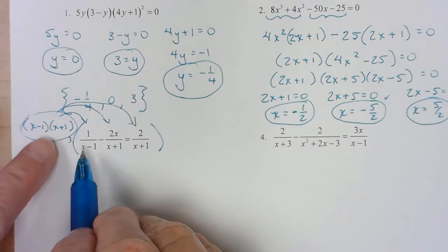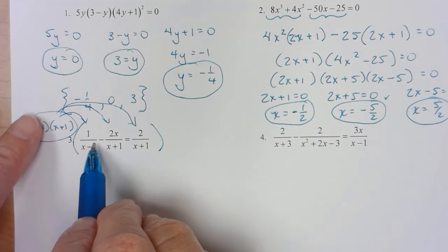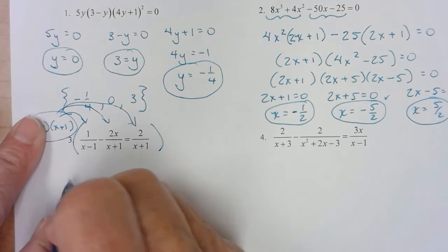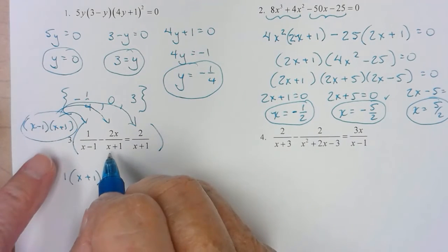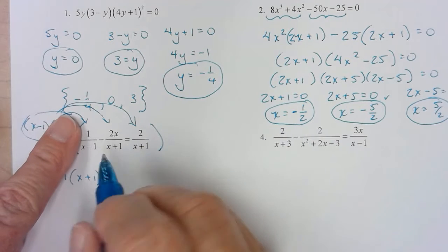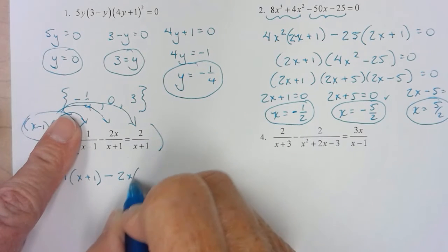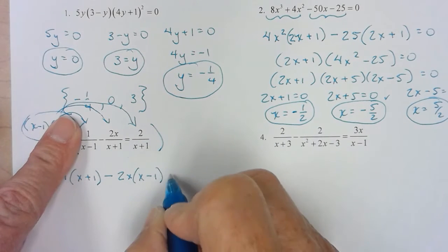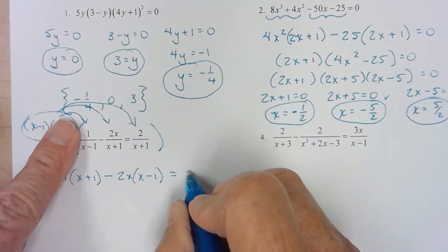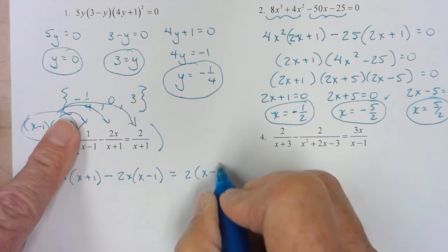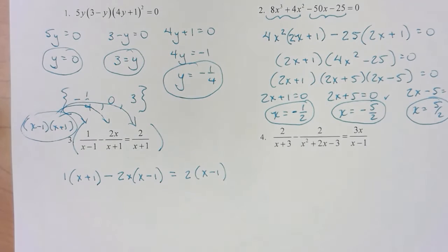So if I multiply this times this one, the x minus 1's cancel. So for that first fraction, all I would have would be that minus my second fraction. The x plus 1's would cancel. So I'd have a 2x and an x minus 1. And this one, the x minus 1's would cancel. And now I'm back to something that I've done before. I need to get rid of my parenthesis.